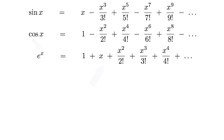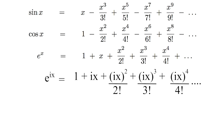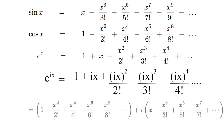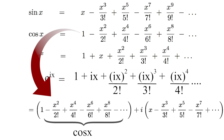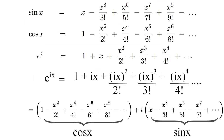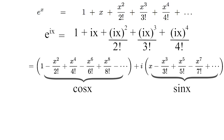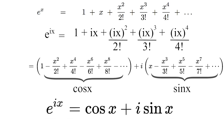Now instead of e to the x, we're going to do e to the ix. That equals the same Maclaurin series but with all the x's replaced with ix. Using the pattern of i to some power, we can simplify — and what you notice is that part of the expression is cosine of x, and another part is sine of x multiplied by i. And thus we have e to the ix equals cosine of x plus i times sine of x, which is Euler's formula.